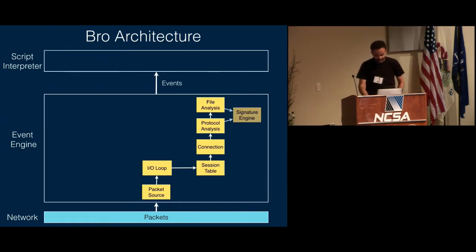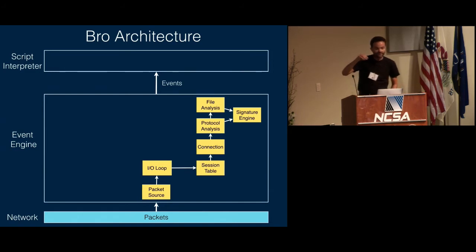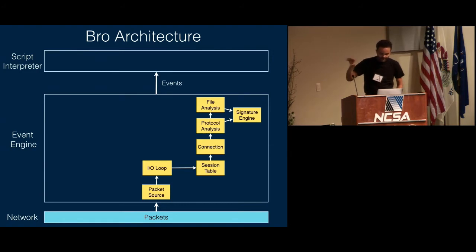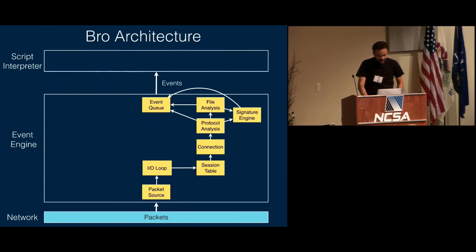There's one more component: Bro's signature engine — not everyone knows Bro has one in the Snort/Suricata sense. You can give Bro patterns to watch for in traffic. It's fed from both protocol analysis and file analysis, so both send raw data in, allowing pattern matching on raw data. You can also access some already-parsed data, like URLs, so you can write a signature matching on a URL just as you would in Snort. All these components — protocol analysis, file analysis, and the signature engine — generate events that feed into Bro's single internal event queue.